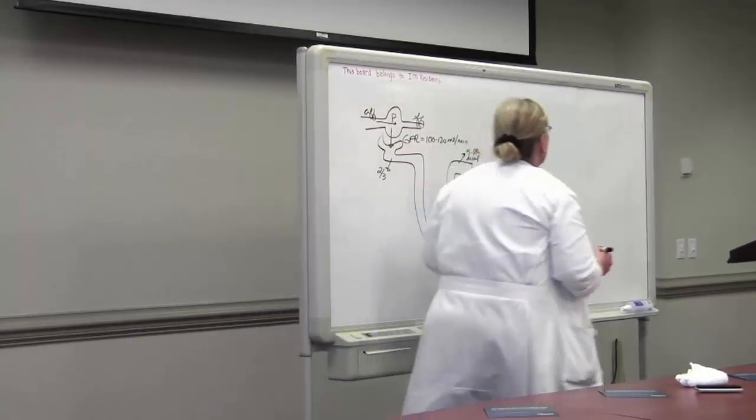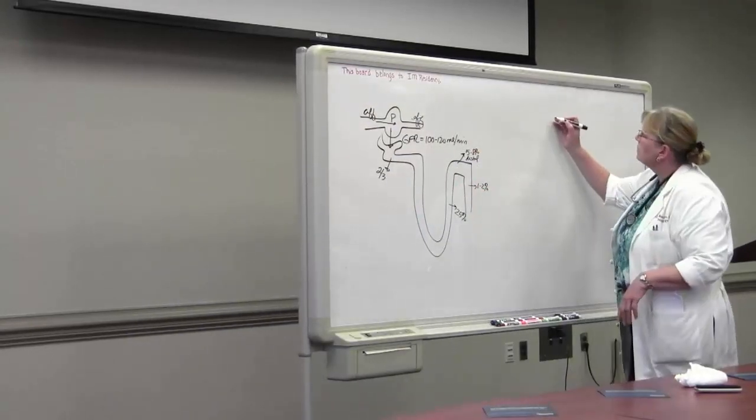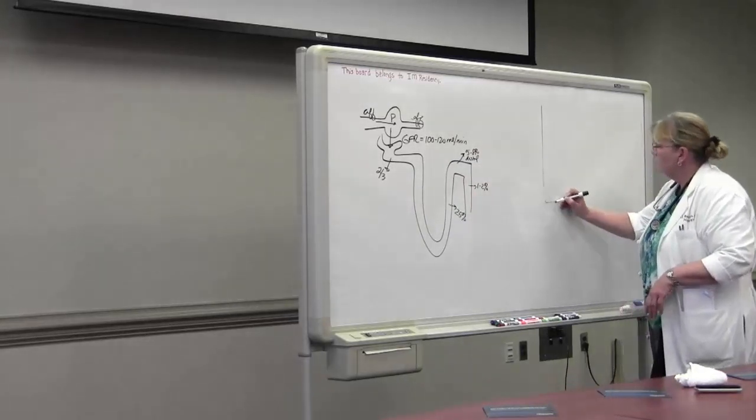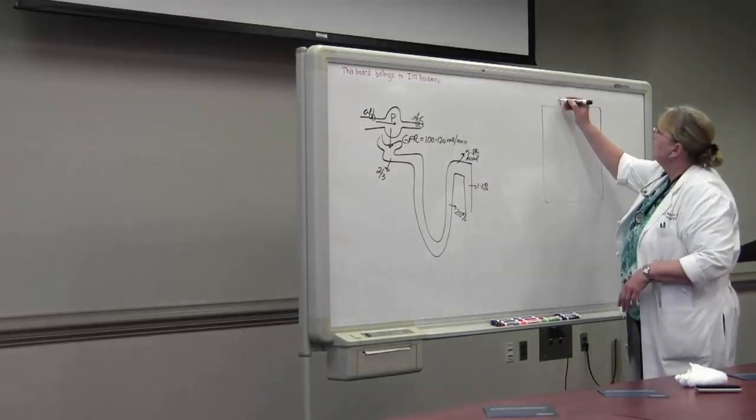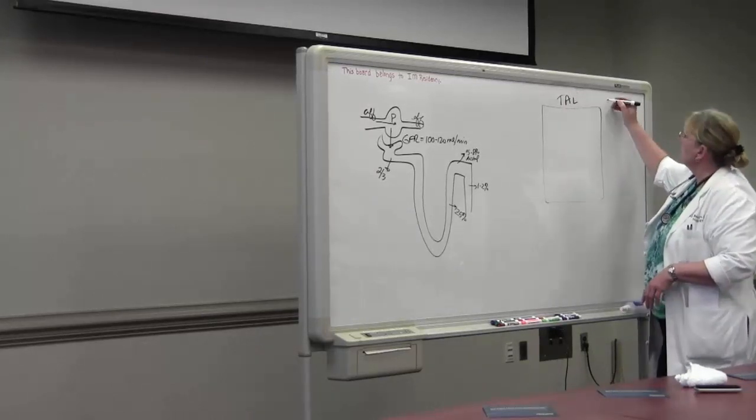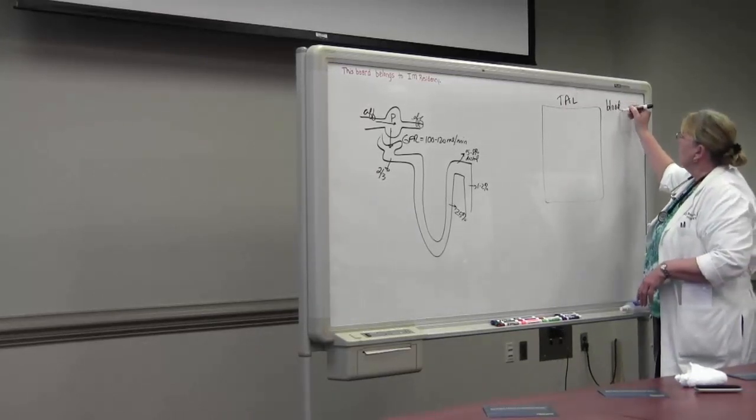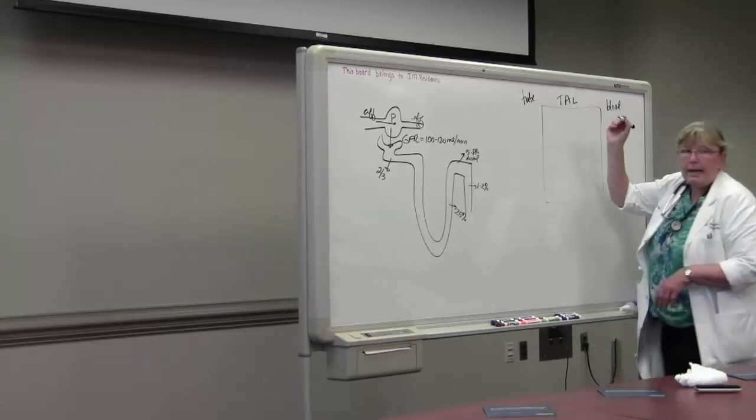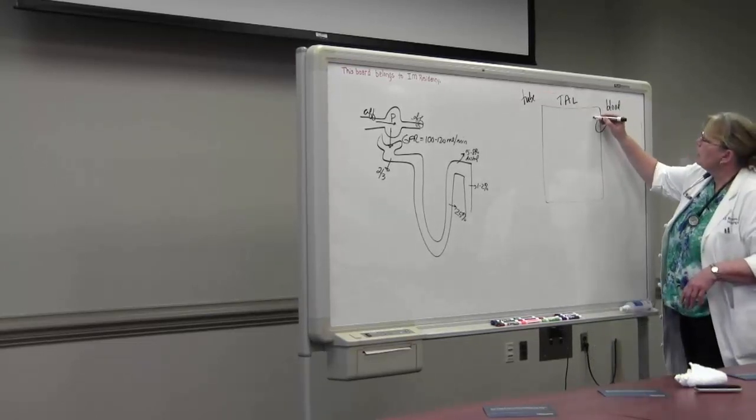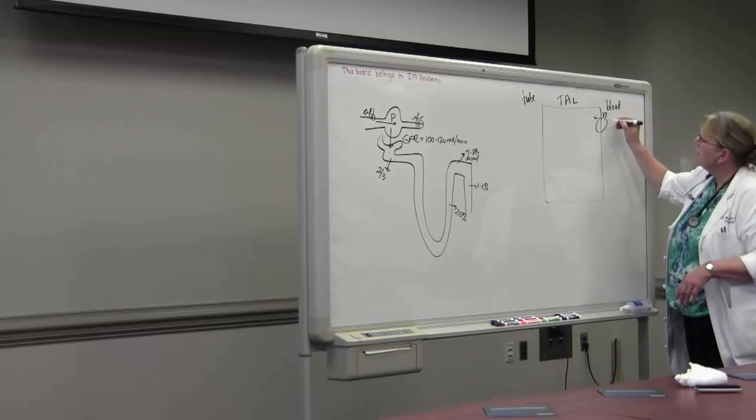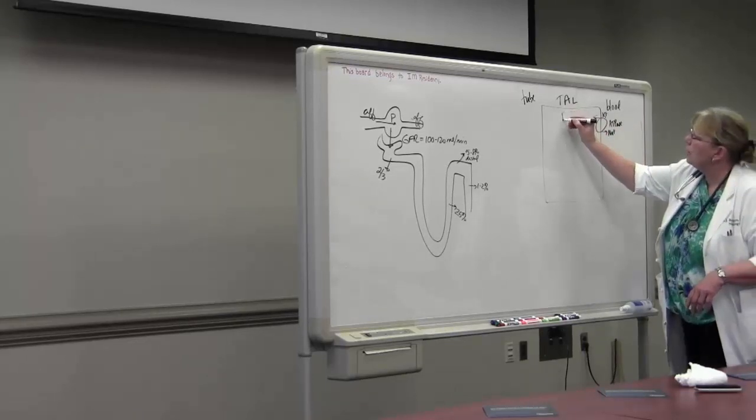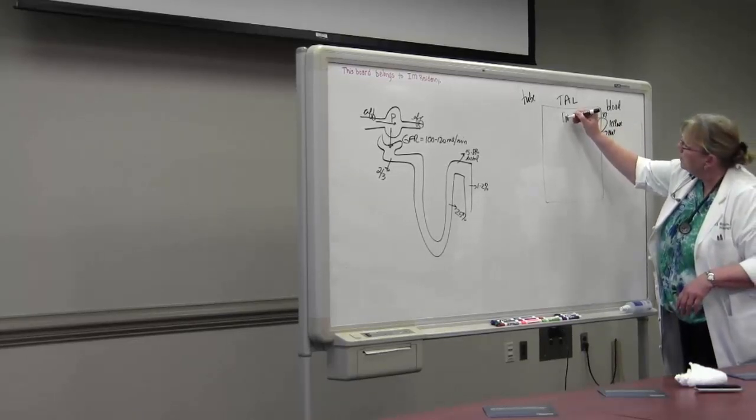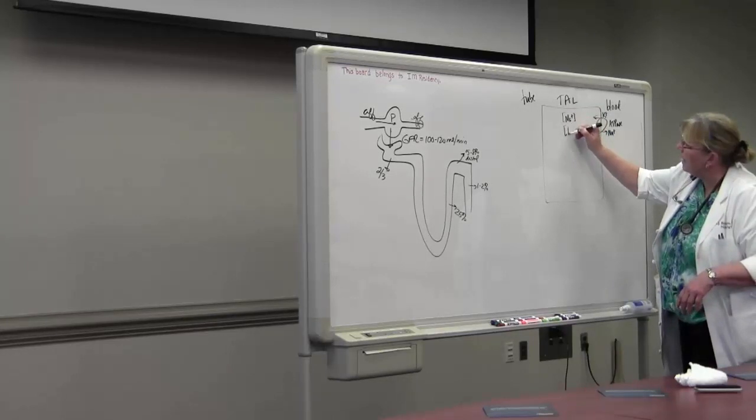So let's move on to the thick ascending limb of Henle. That's right here. The thick ascending limb. This is the blood side. This is the tube side. As on all cells of the body, you have a sodium-potassium ATPase. And this guy's whole purpose is to keep intracellular sodium low and intracellular potassium high.